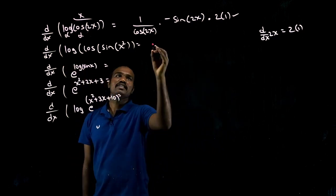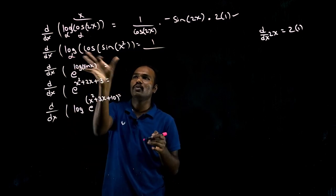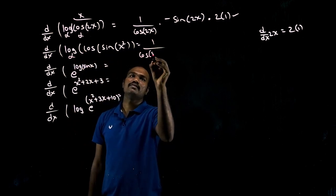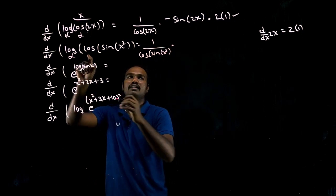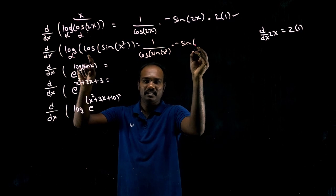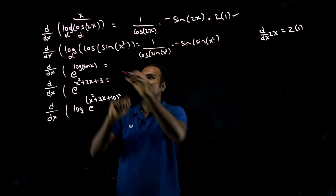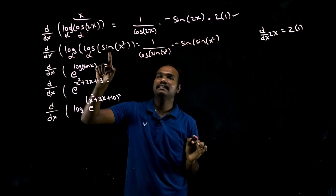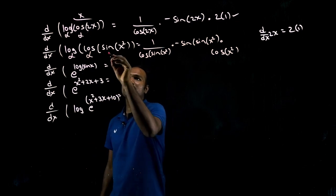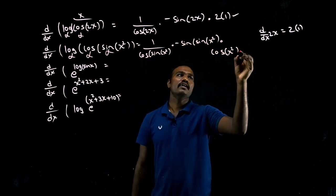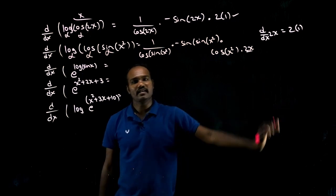Sine differentiation is cos of x squared. Then x squared differentiation is 2x. x differentiation is 1 — just 2x is enough. Next: e power log sine x. e is the first thing. e^x differentiation is e^x only. So e^(log sinx) differentiation is e^(log sinx) times. Now go inside: log differentiation is 1/x. x means sine x. So 1/sin x. Times. Sine x differentiation is cos x.